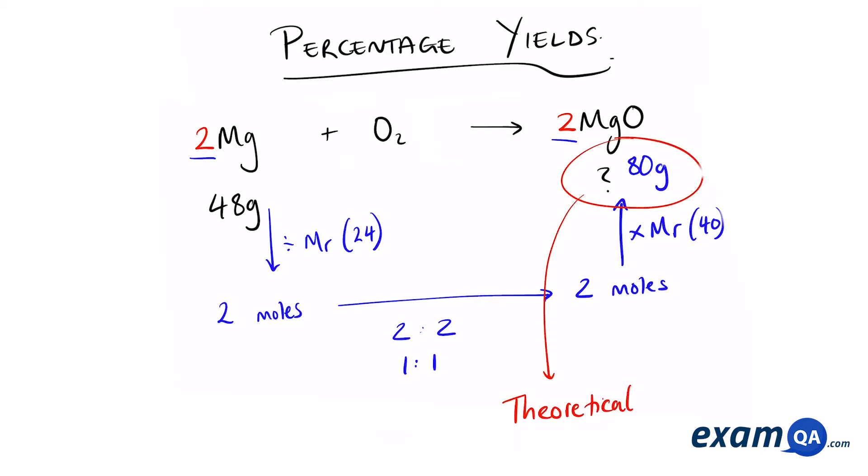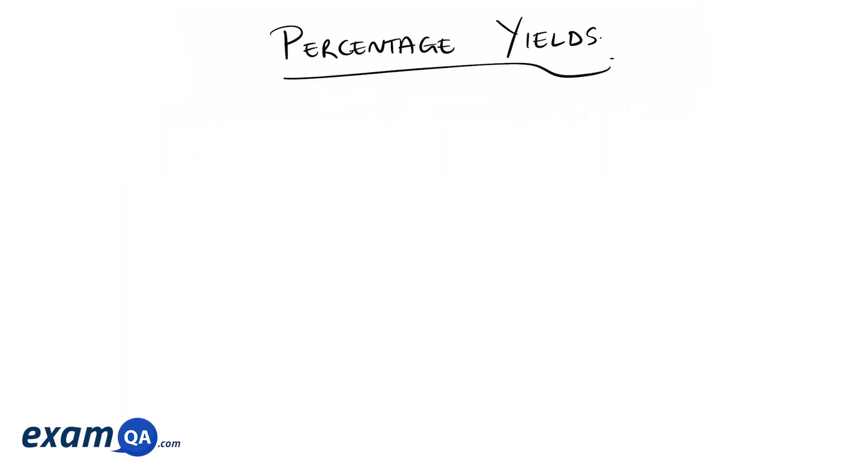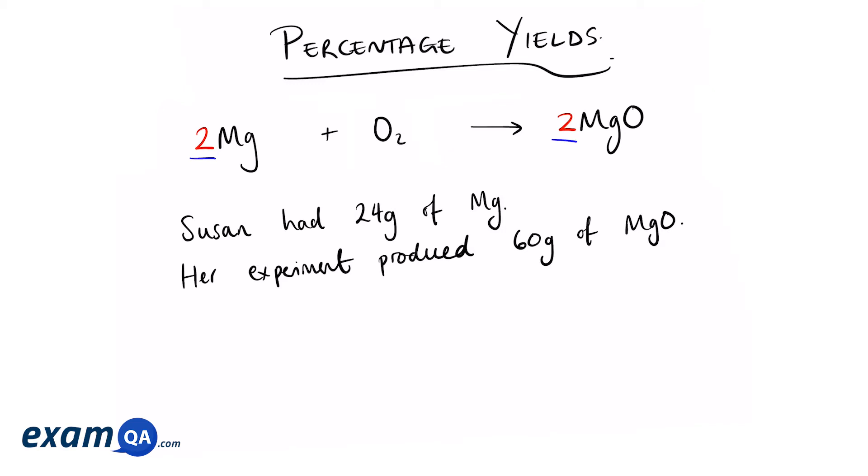What we just calculated was the theoretical mass. Meaning if we had 48 grams of magnesium and it all completely reacted, we would produce 80 grams of magnesium oxide. However, we know that in real life chemical reactions don't go as planned. Susan had 24 grams of magnesium. Her experiment produced 60 grams of magnesium oxide.